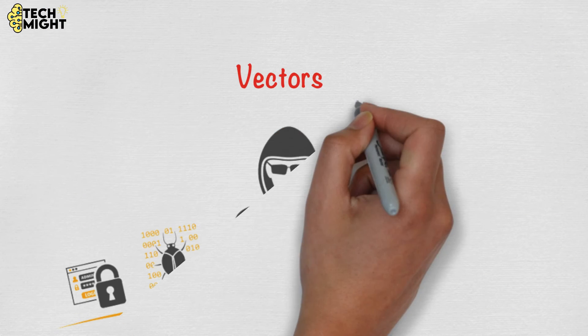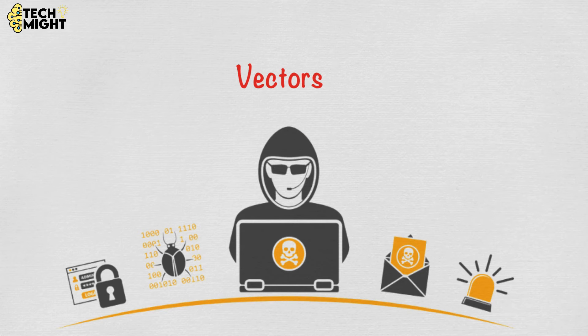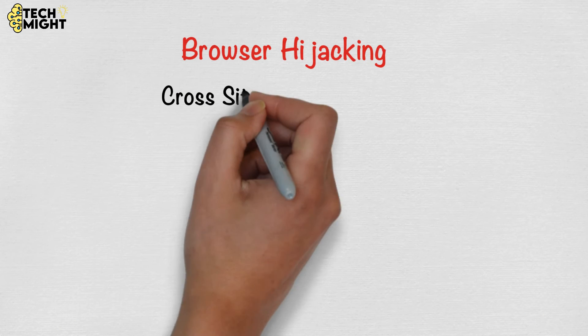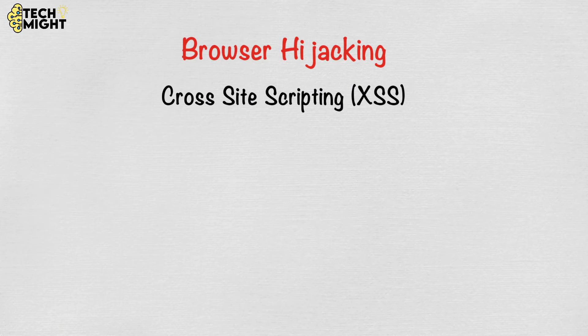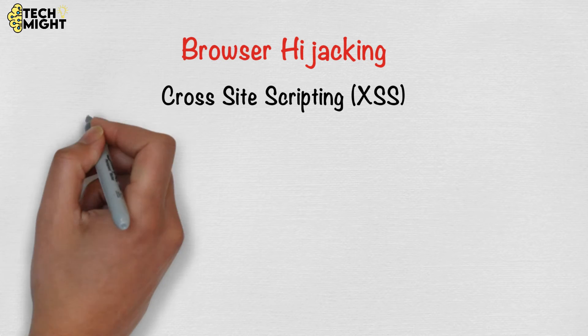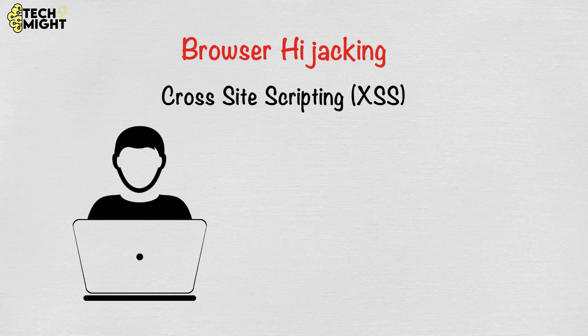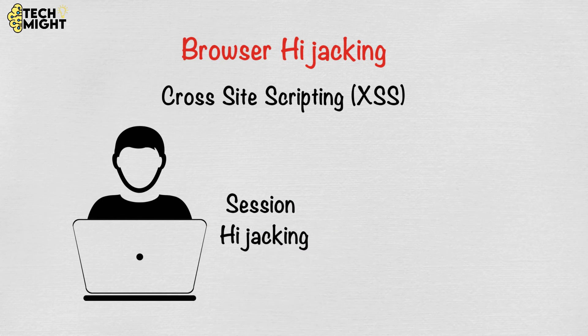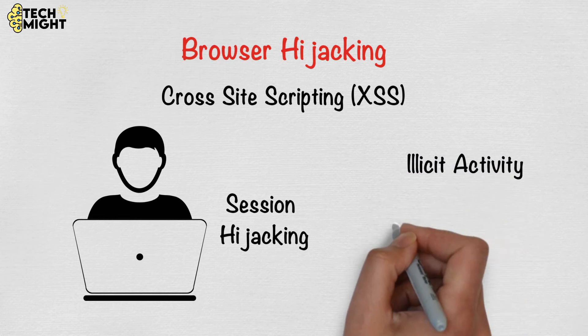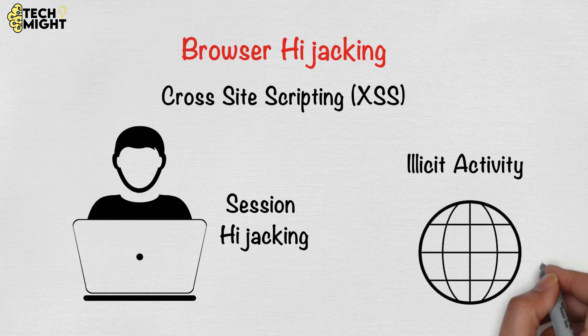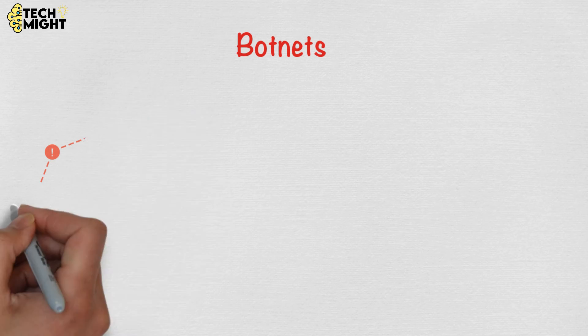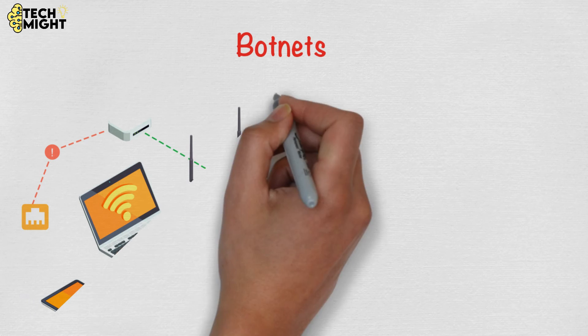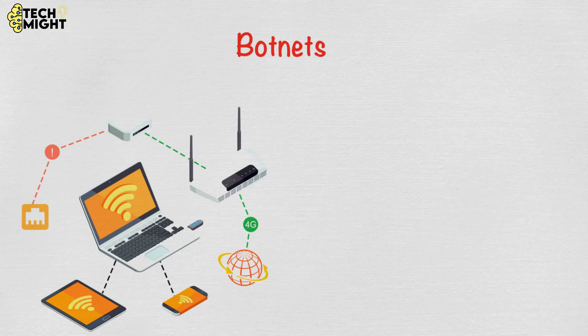Now let me tell you some vectors that are the primary methods cyber criminals use to conduct criminal activities. Browser hijacking: attacks like cross-site scripting can cause malicious code to run in a user's browser. This can result in session hijacking, drive-by downloads, and other illicit activity carried out in the user's browser without their consent.